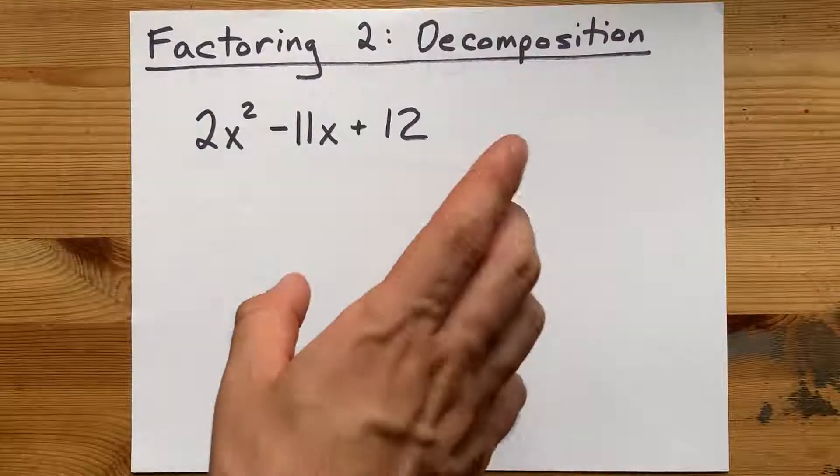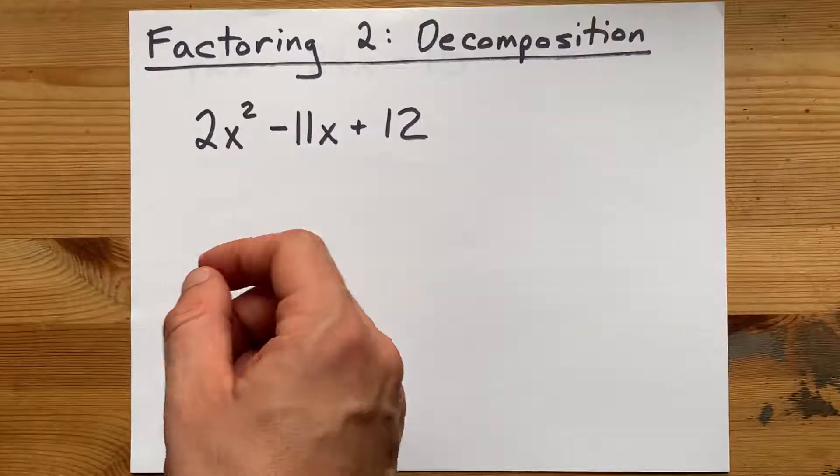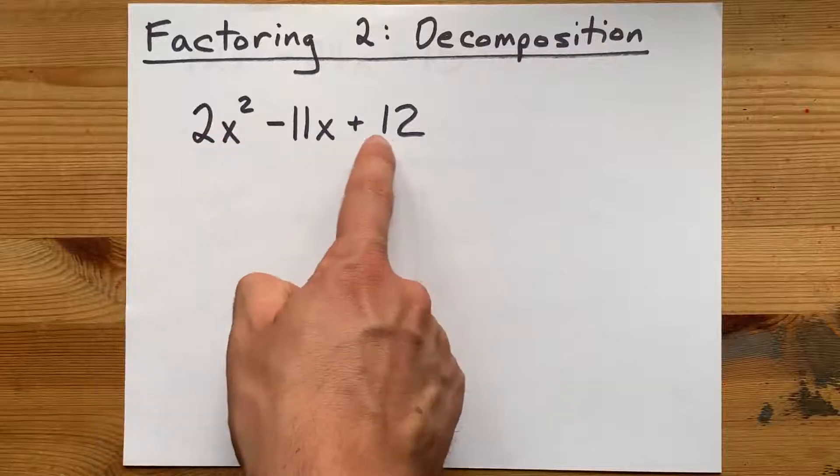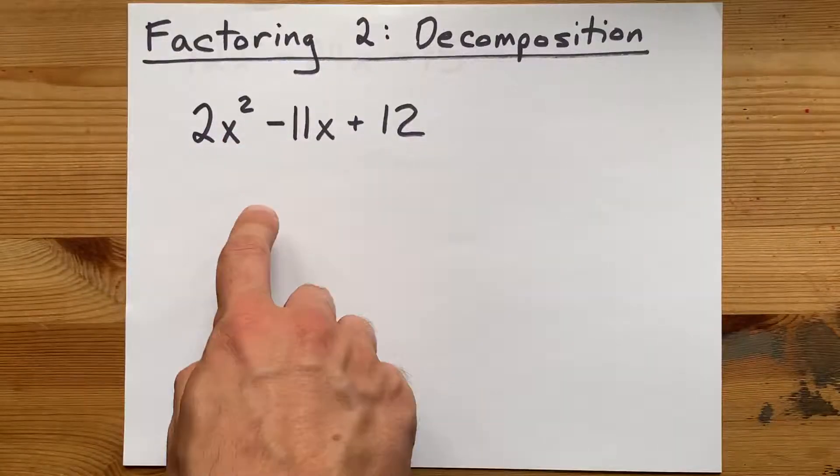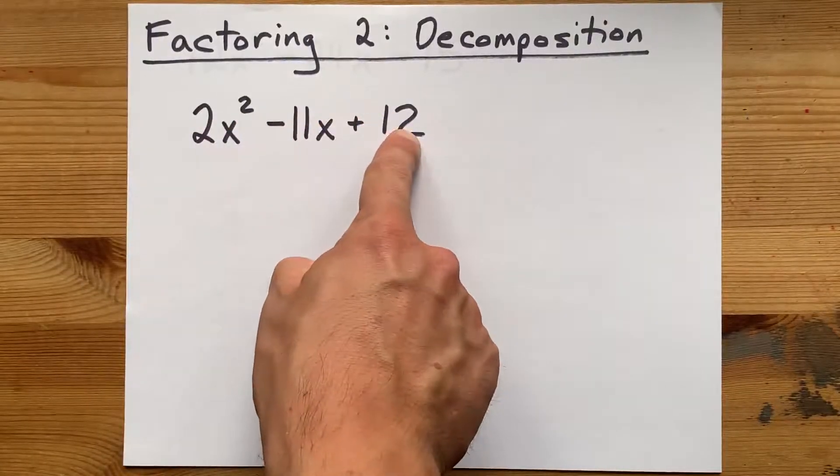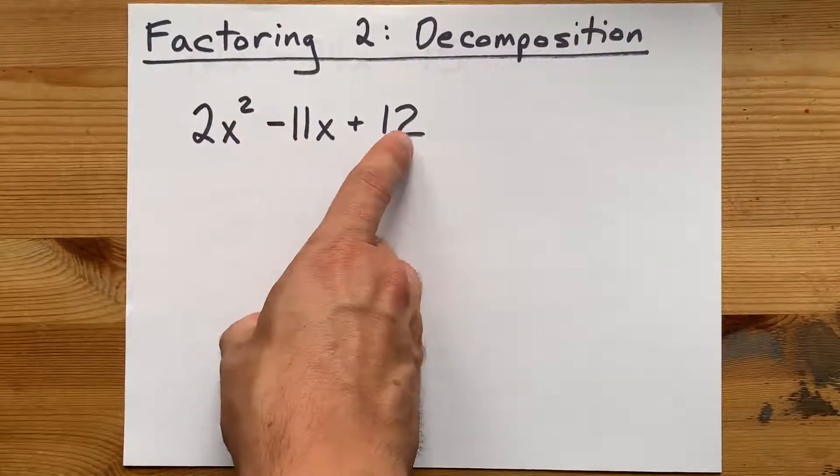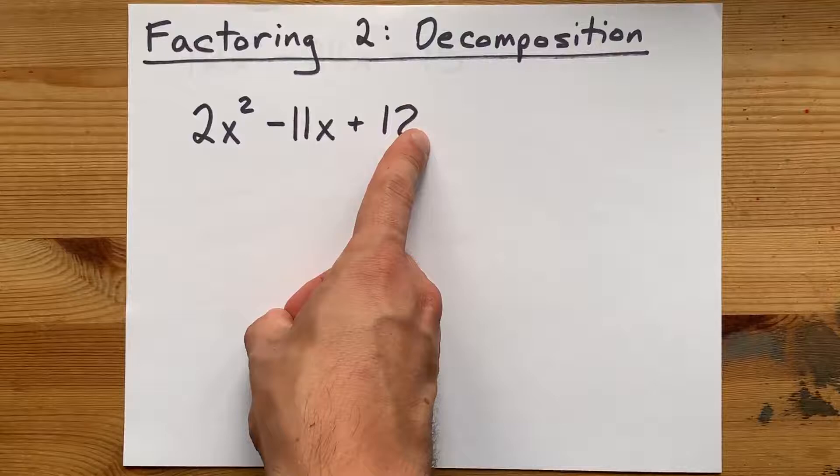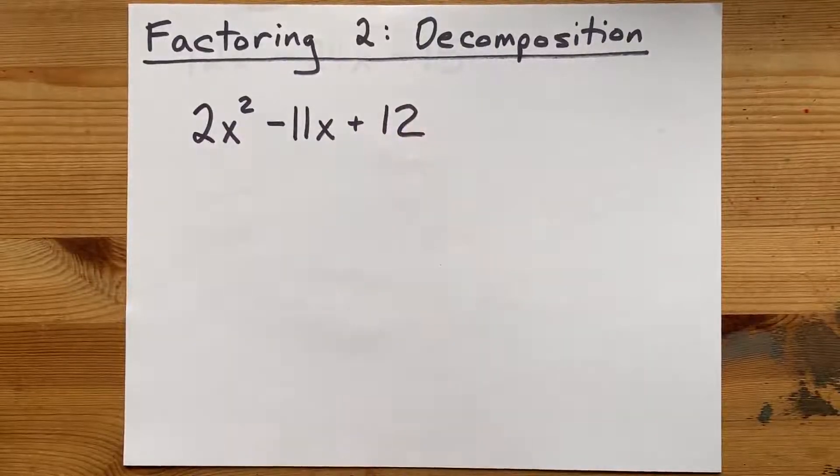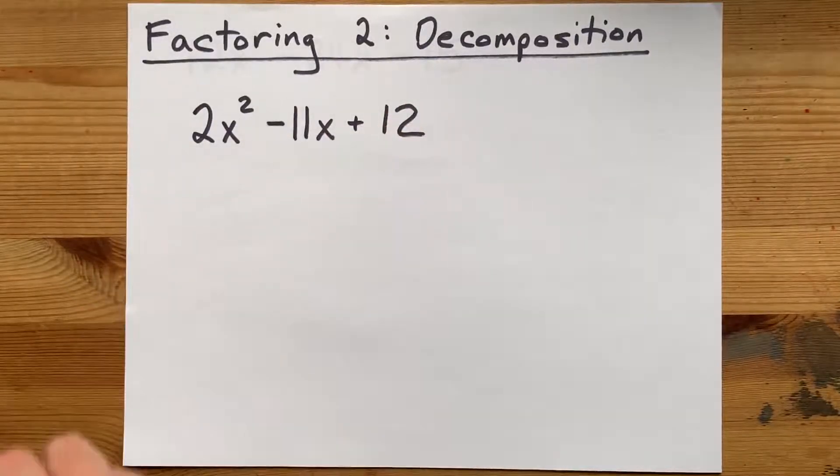I am a big fan of the method of decomposition to factor quadratic trinomials. What I mean is one, two, three terms. One of them is x squared, one of them is just x, and one of them doesn't have any x's on it at all. I'd like to do three examples here to show you how I do it.